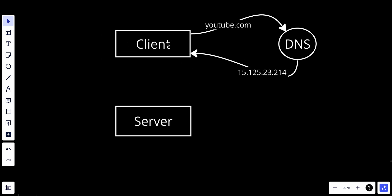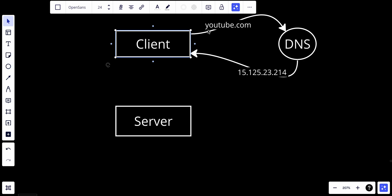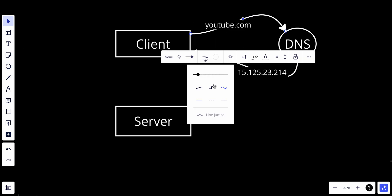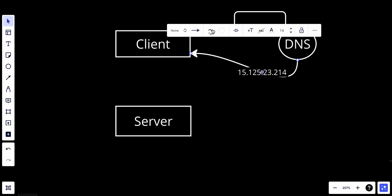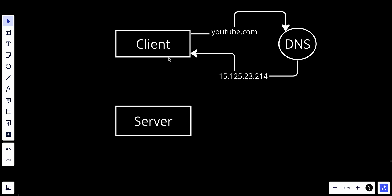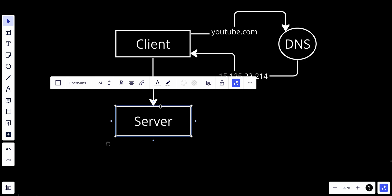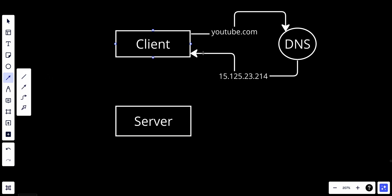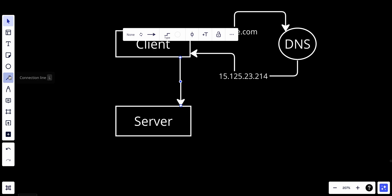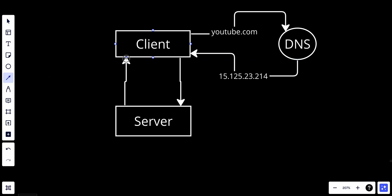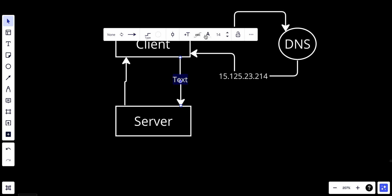Once the client receives the IP address from the DNS, it will try to connect with the server using an HTTP request - requesting an HTML page or something like that. And the server will send back those HTML pages.